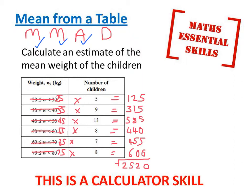Finally, we divide. Now, we don't divide by 6 because there are 6 rows. When you work out the mean, you divide by how many things there are. In this case, how many children. I need to work out the total of the children by adding up the frequency column. 5 add 9 add 13 add 8 add 7 add 8 is 50.